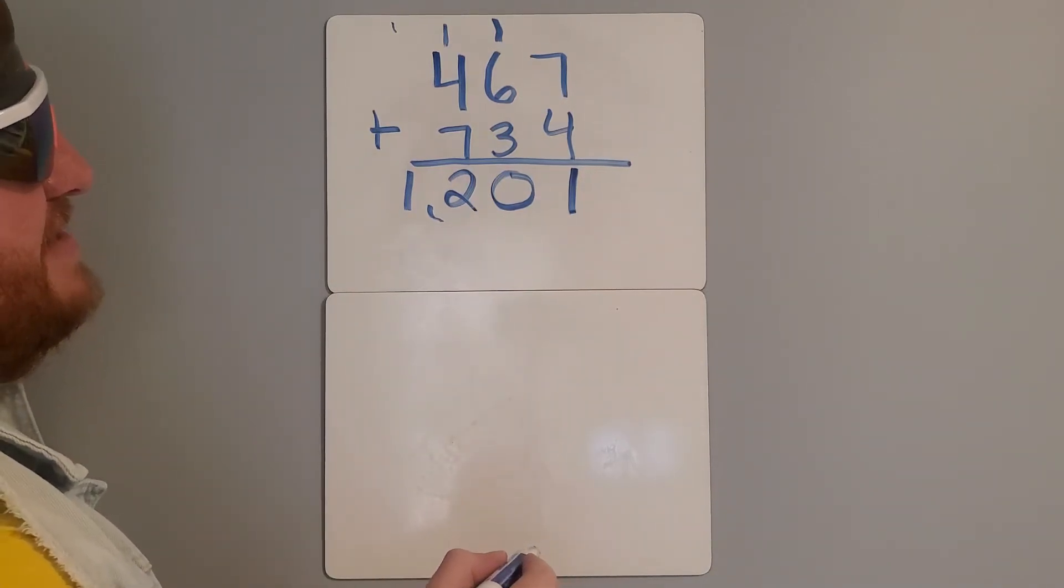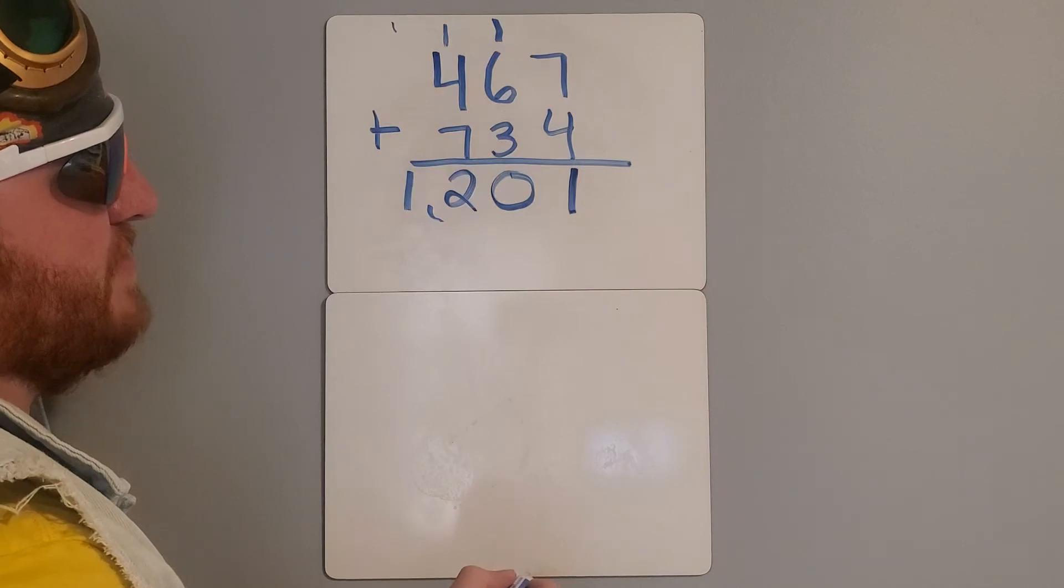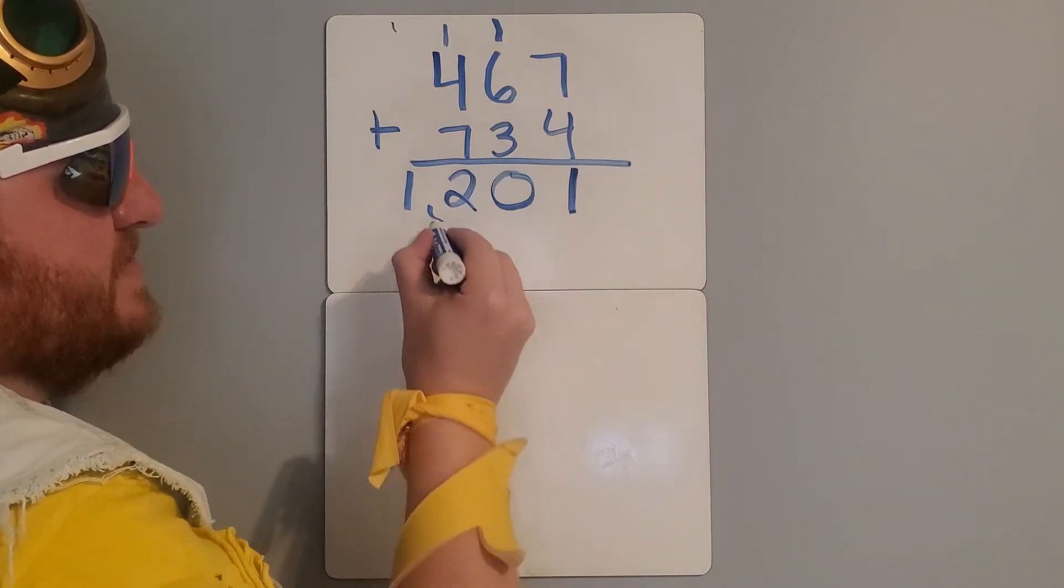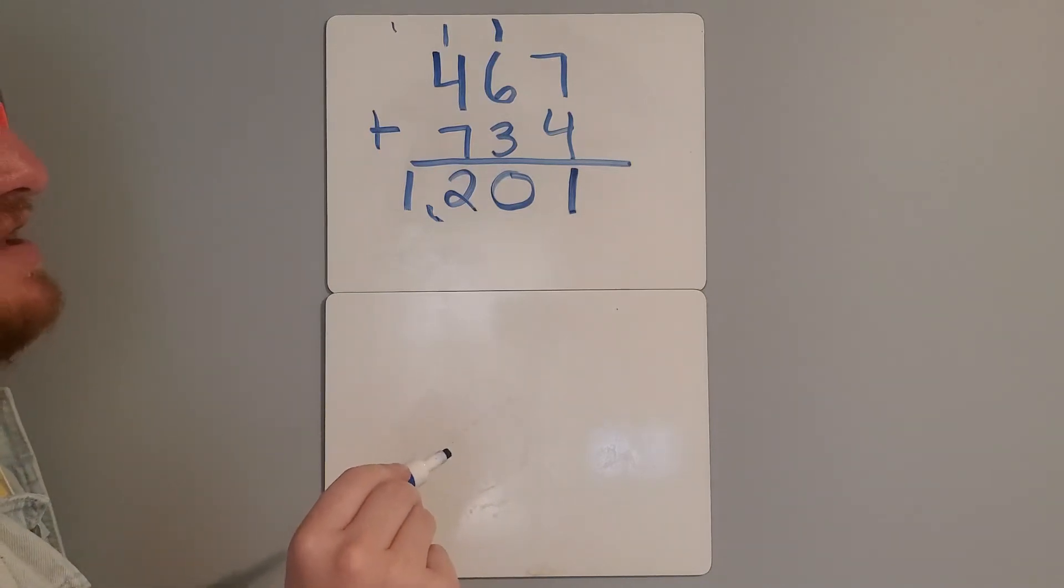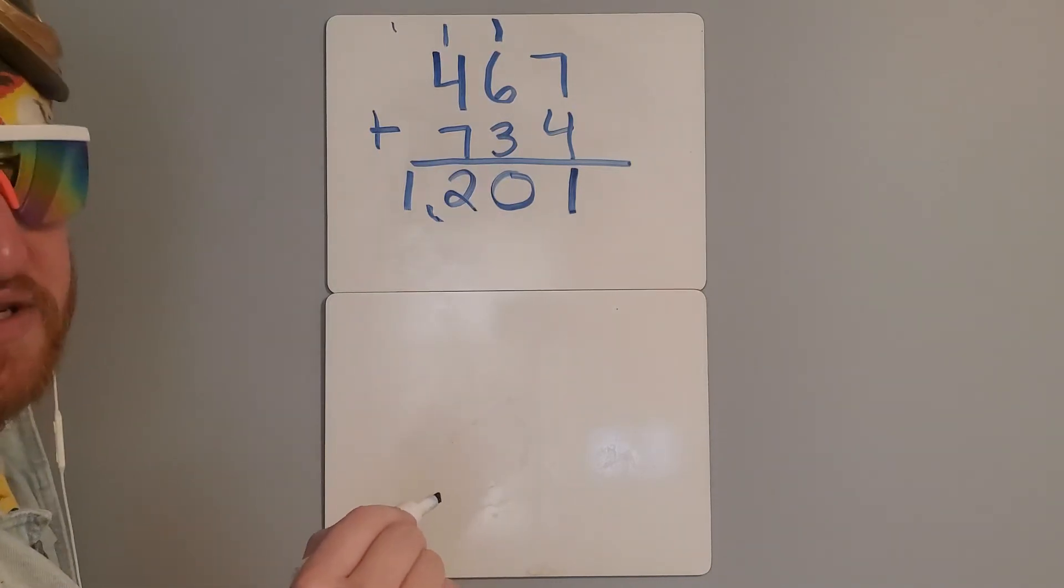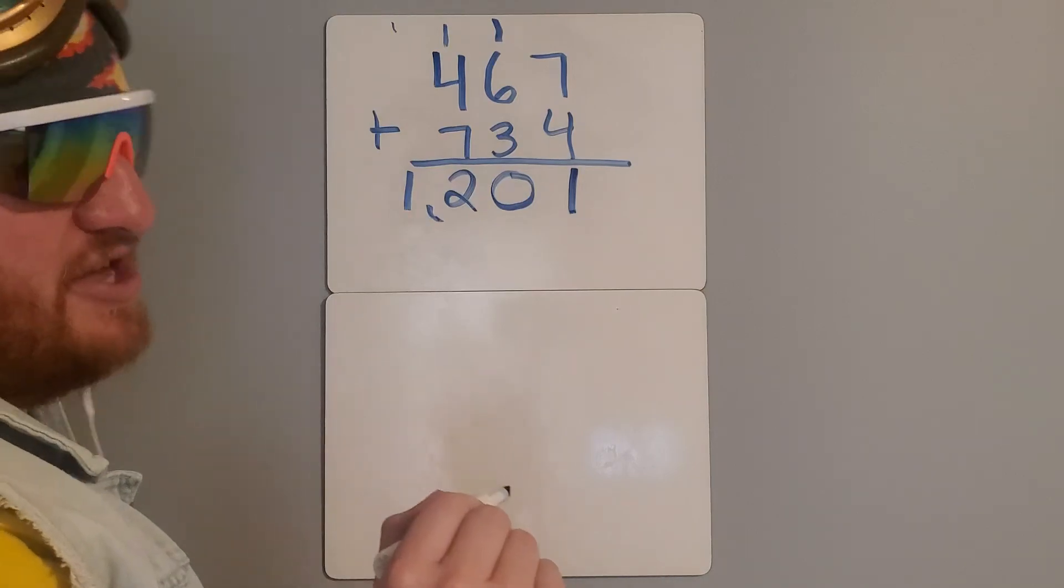So, 467 plus 734 is 1,201. Don't forget to put your comma. Hopefully, this helps you out with any multi-digit addition problems. Thank you and have a good day.